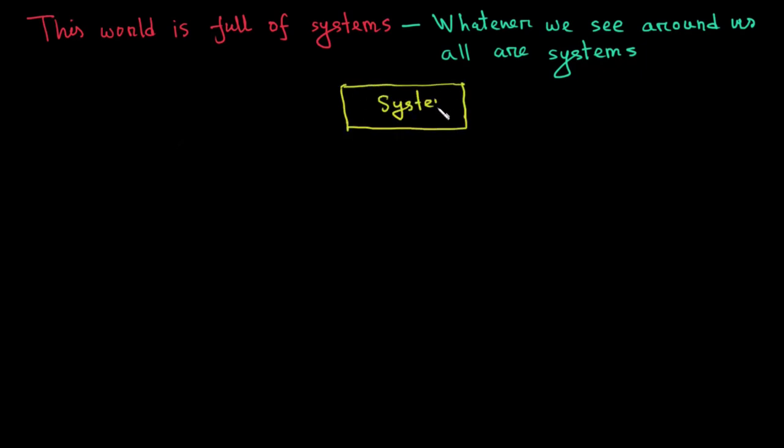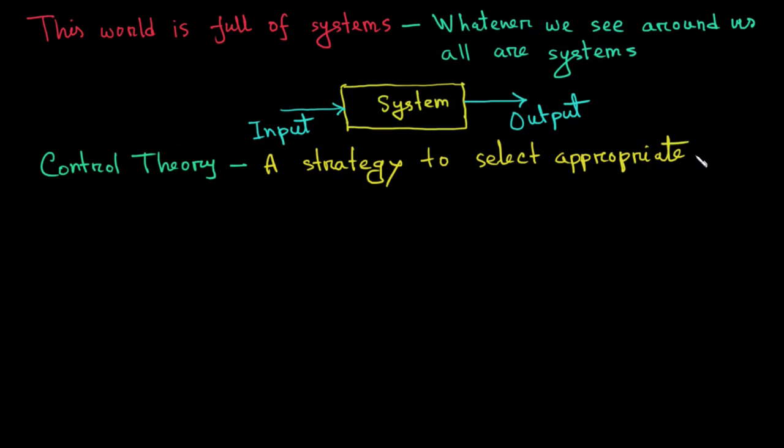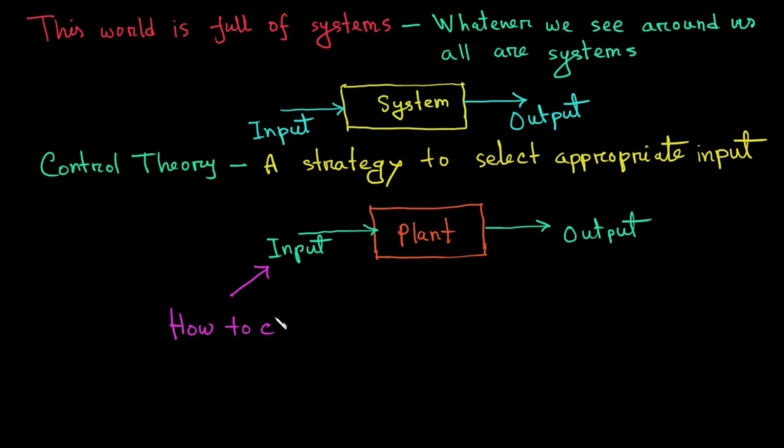So basically this world is full of systems. Whatever we see around us are the different types of systems. If we like to represent a system in terms of a block diagram, the input will go in the system and the output will come out of the system. Now the mathematics that determines the control mechanism of a system is called control theory. So we can say control theory is the strategy to select appropriate input. Control theory helps us to change the system's input in such a way so that we can get desired or expected value at the system's or plant's output.